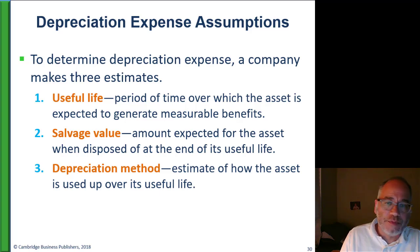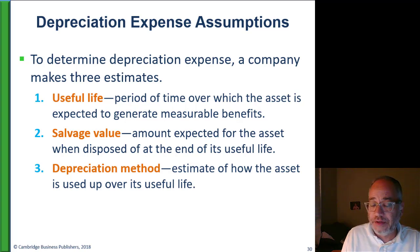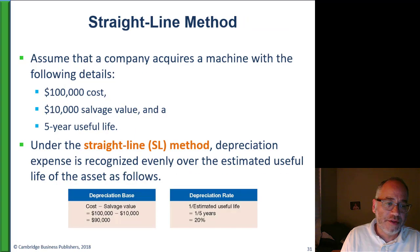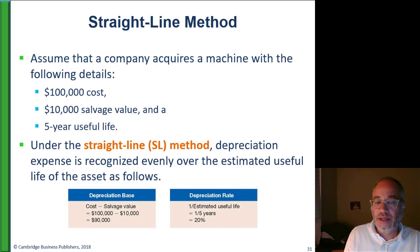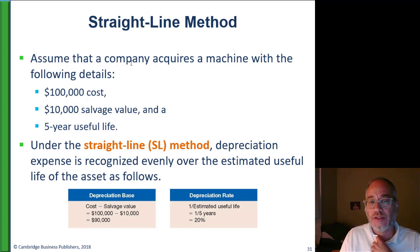To calculate depreciation expense, you need three numbers: the useful life, or estimated useful life for the asset; salvage value — how much the asset is going to be worth at the end of its useful life when you're ready to sell it or get rid of it; and the depreciation method. One method is called straight line. Straight-line depreciation equals cost minus salvage value, divided by the useful life.